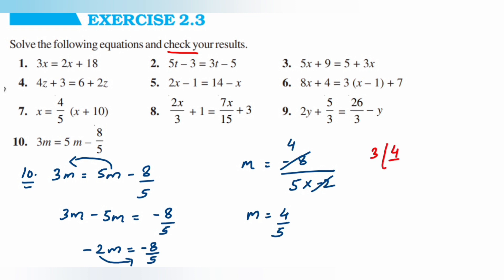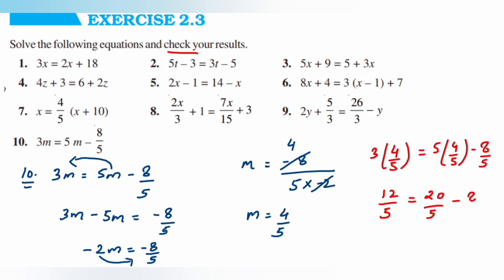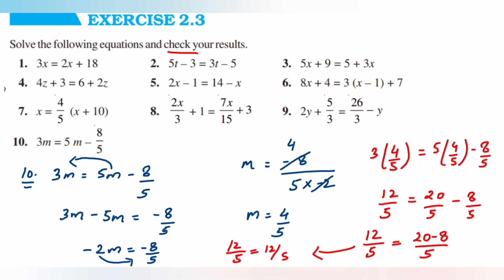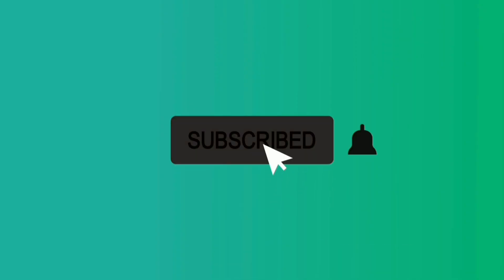Now we'll verify by substituting m is equal to 4 upon 5: 3 into 4 upon 5 is equal to 5 into 4 upon 5 minus 8 upon 5, giving 12 upon 5 is equal to 20 upon 5 minus 8 upon 5. Subtracting on the right gives 12 upon 5 is equal to 12 upon 5. LHS equals RHS, so m is equal to 4 upon 5 is the correct answer. I hope you understood all the problems — leave a comment below, thank you for watching, and please subscribe and click the bell icon.